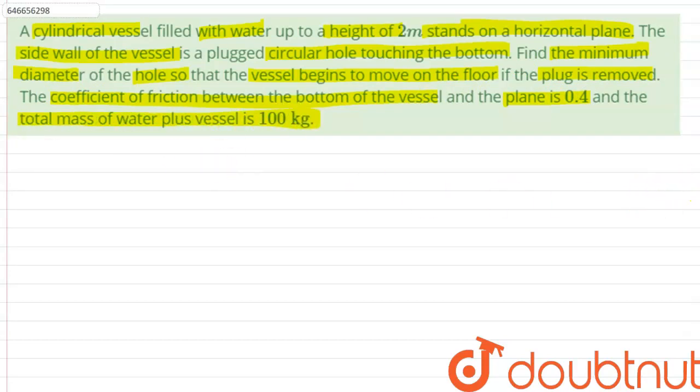So the question is asking us to find out what should be the diameter of the cylindrical vessel if the coefficient of friction is 0.4 and the plug is removed.